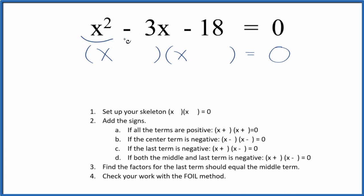Let's factor the equation x squared minus 3x minus 18 equals 0. We use these guidelines here to help us do that. First off, we need to set up a skeleton equation. I've already done that here.